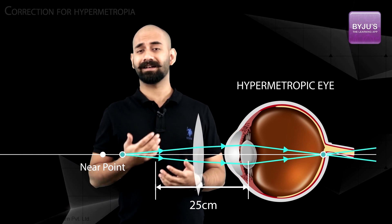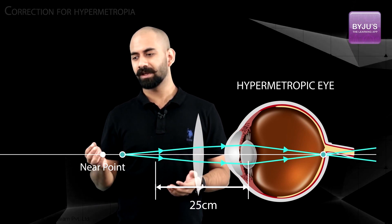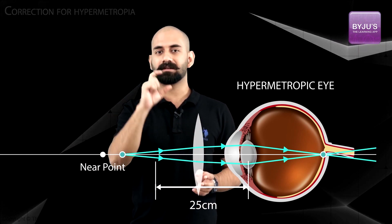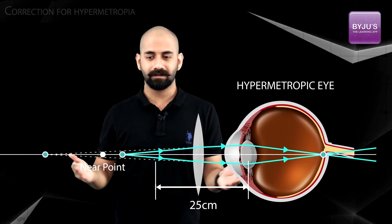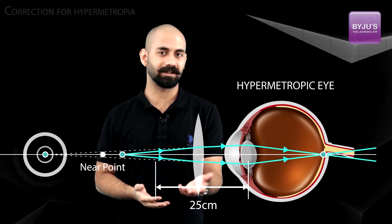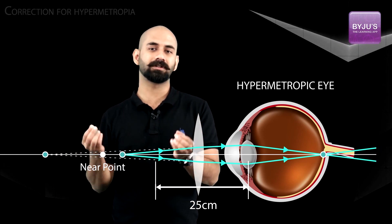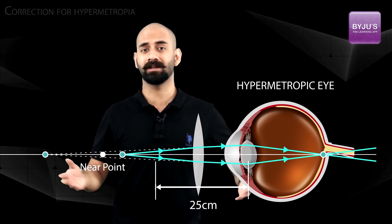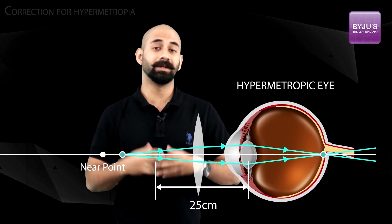It need not be a biconvex lens — any converging lens will do. Another way to look at it: the object is within the near point, so you use a converging lens that forms an image beyond the near point of the eye. That image acts as the object for the crystalline lens, which can then focus it onto the retina without any issues, since it's beyond the near point.